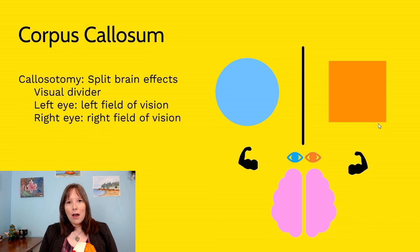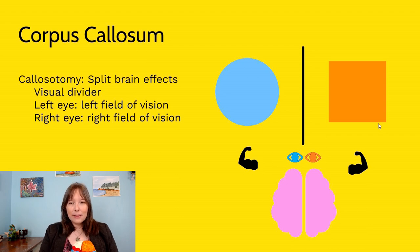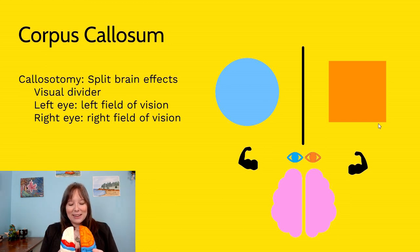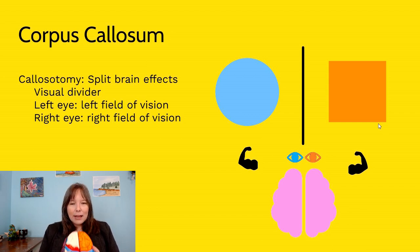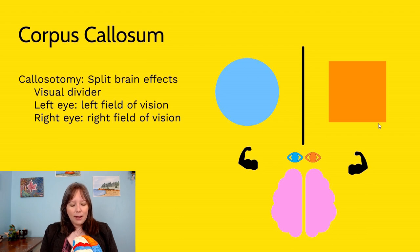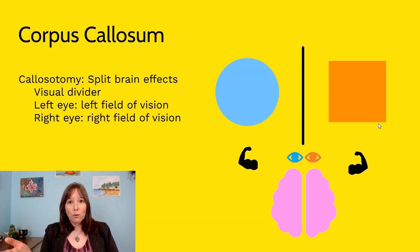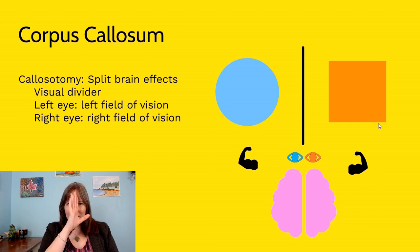In split-brain patients, where the corpus callosum has been severed, there is no way for the two hemispheres to communicate, so they work in isolation independently of each other. These people wouldn't die, but how they processed information was very unique. In one experiment, a split-brain patient would sit with a divider on their nose so that they could see an orange square with their right eye and a blue circle with their left eye.